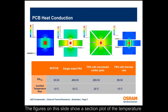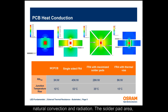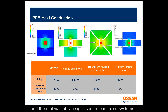The figures on this slide show a section plot of the temperature distribution under steady state conditions. It also lists the thermal resistance of various substrates and the rise in junction temperature of the LED. The heat transfer is done by natural convection and radiation. The solder pad area, the thermal conductivity of the substrate material, and thermal vias play a significant role in these systems.